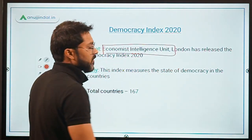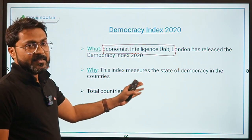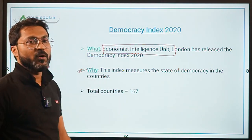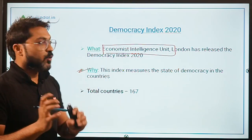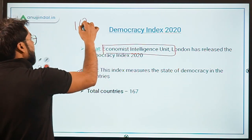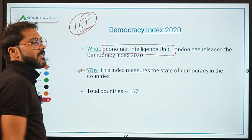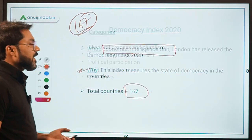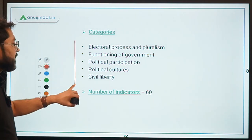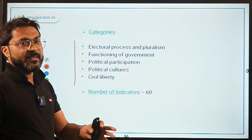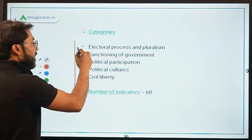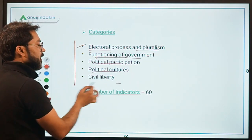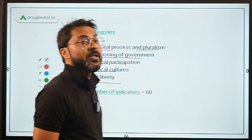The Economist Intelligence Unit, located in London, has released the Democracy Index 2020. This index measures the state of democracies in 167 countries across five categories: electoral process and pluralism, functioning of government, political participation, political culture, and civil liberty. You should remember these five category names — they are important for the exam. There are 60 indicators in total.